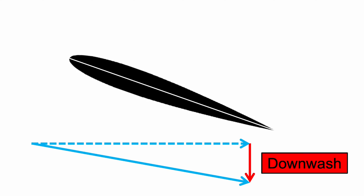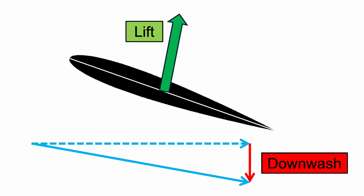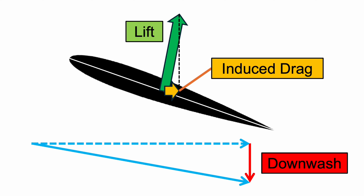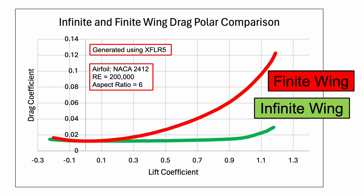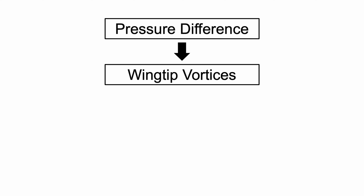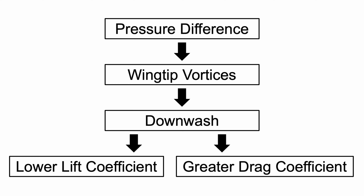Now that we've learned how wingtip vortices reduce lift force, let's talk about how they create drag force. Looking back at our downwash diagram, by definition the lift force acts at a right angle to the free stream. When we add downwash, however, not only is the free stream tilted downwards, but the lift force vector is angled backwards as well. This creates a component of the lift force that acts in the opposite direction the plane is flying. This backwards component of the lift force is called induced drag force. We can see the effect of wingtip vortices on the drag coefficient in the drag polar graph, where the drag coefficient is shown for different lift coefficients. The drag coefficient of a finite wing is greater for a given lift coefficient than that of an infinite wing.